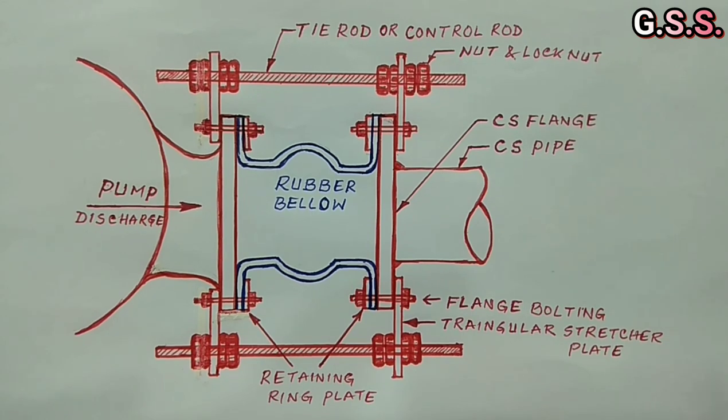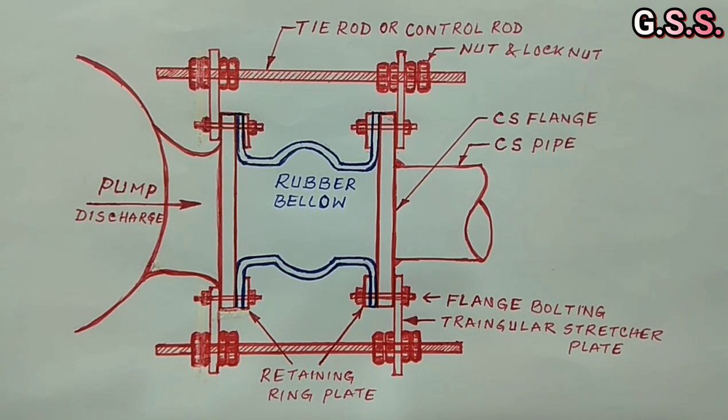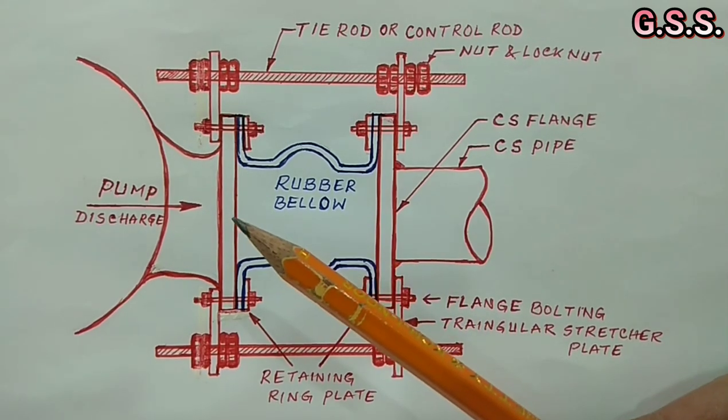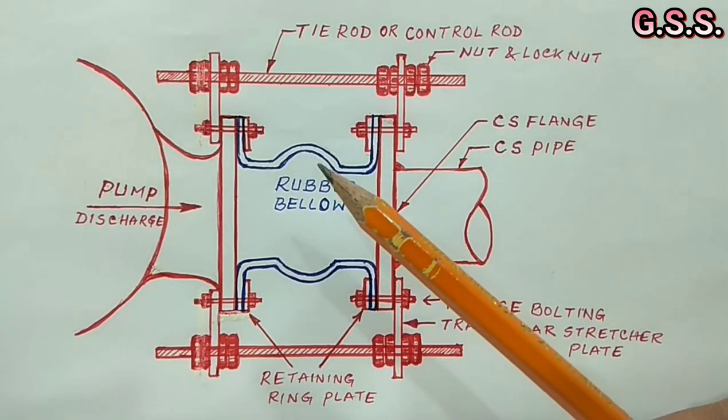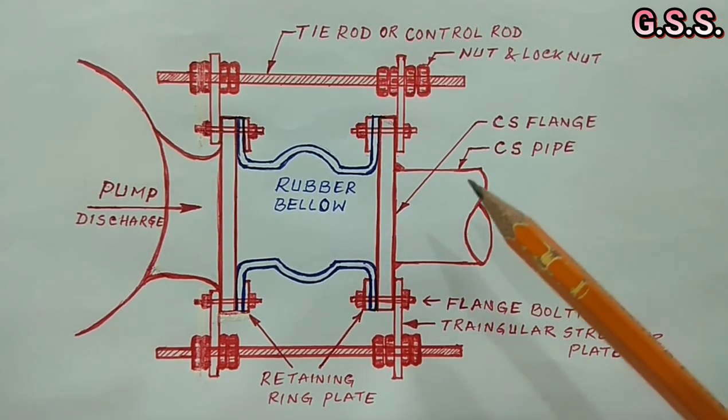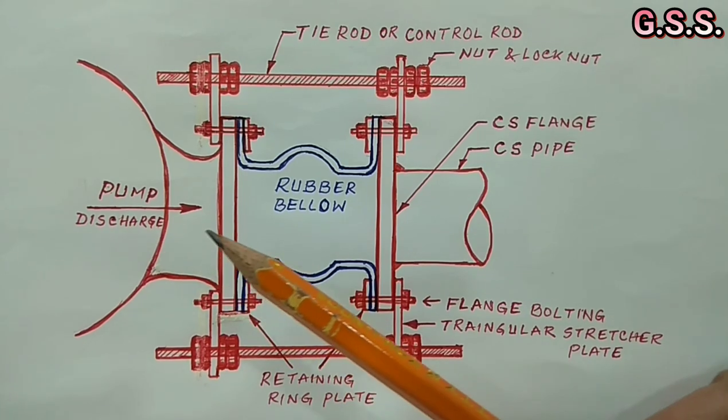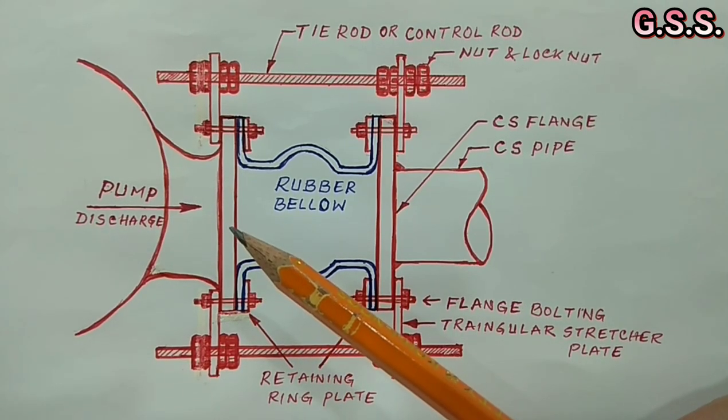In this sketch, I have drawn the rubber bellow mounted on pump discharge nozzle. Rubber bellow shown in blue color and other steel parts like carbon steel pipe, flange, pump casing and pump nozzle shown in red color.